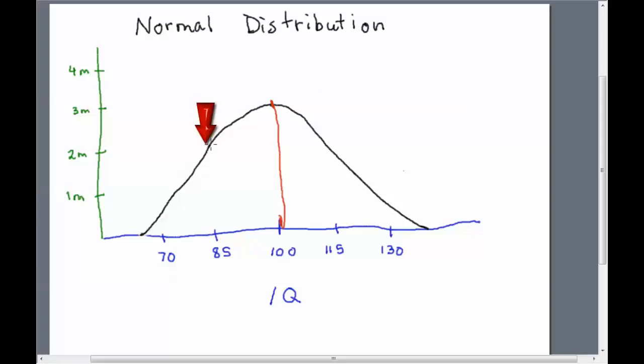So if we look here, we have about 2 million people scored 85, and about 2 million people scored 115. And if we go down here, we've got about 500,000 people scored 70, and that same number of people, 500,000 scored 130. So what does this all mean?